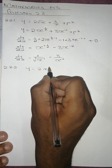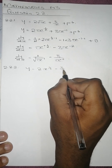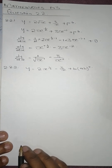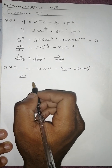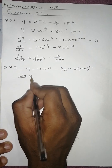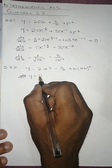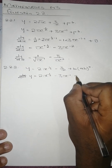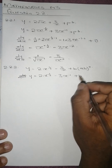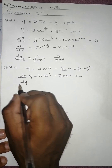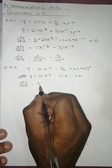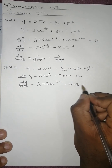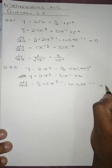Question 2.2.2: y = 2x^(1/3) - 3/x + b. We first rewrite it in proper form: y = 2x^(1/3) - 3x^(-1) + b. Note that b is a constant so its derivative is 0. Applying the power rule: dy/dx = (1/3)(2)x^(1/3 - 1) - (-1)(3)x^(-1-1) + 0, giving (2/3)x^(-2/3) + 3x^(-2).